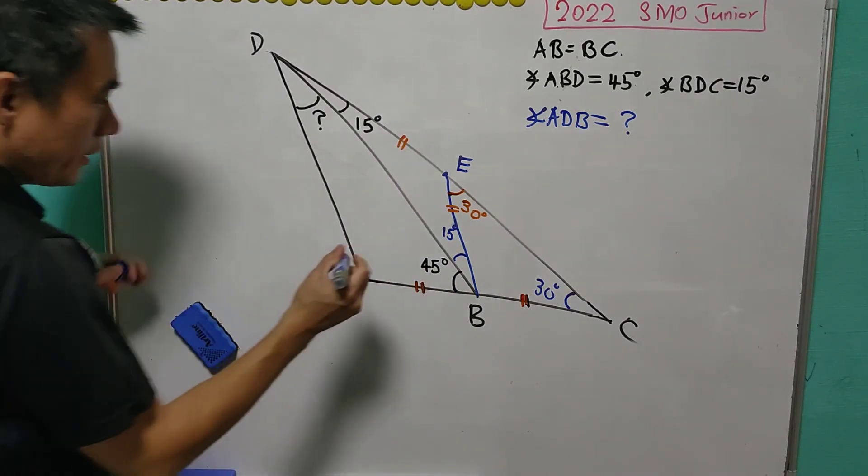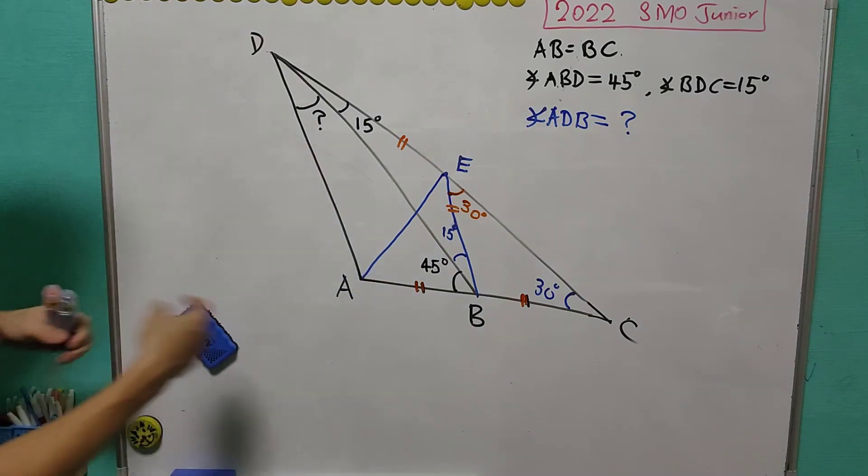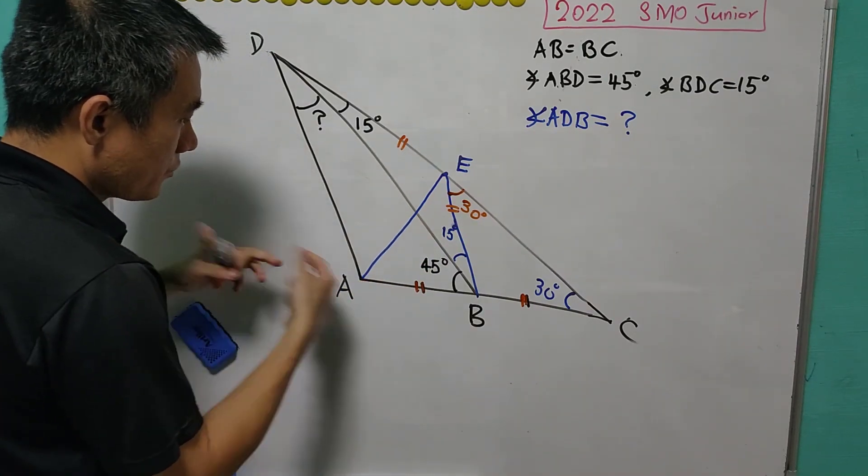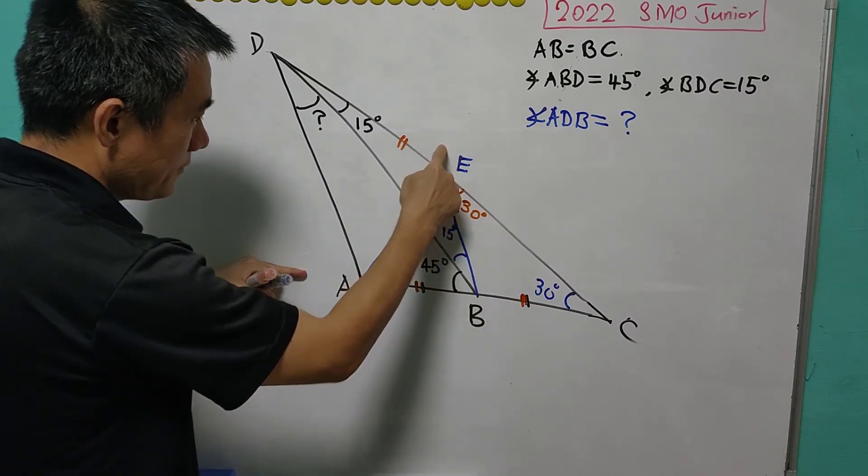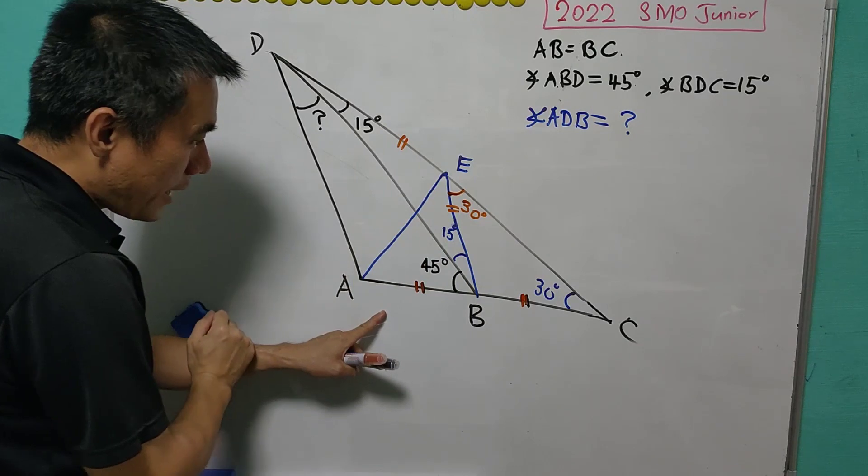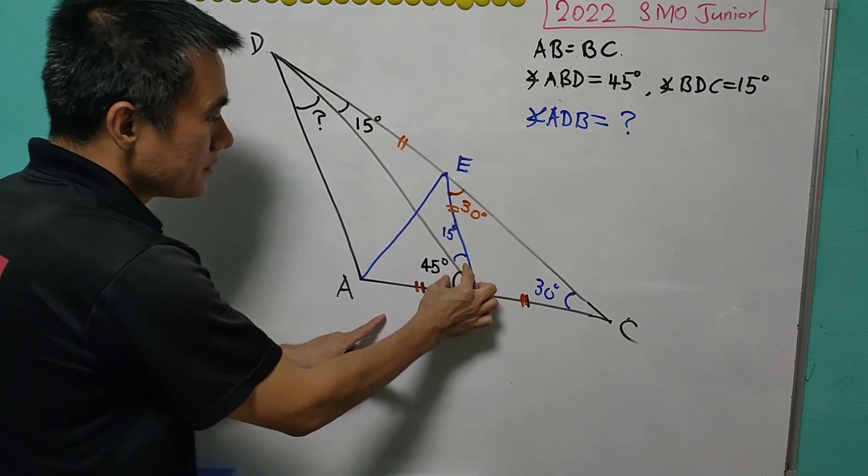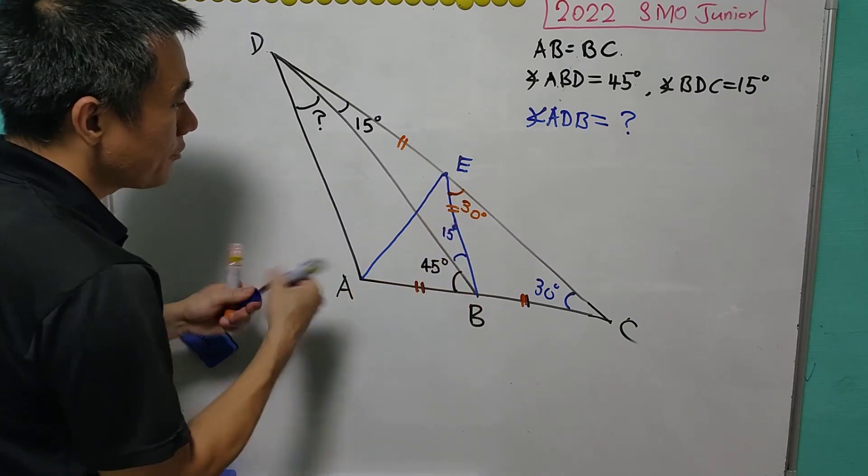After that, we join A and E. Now, we will focus on the triangle ABE. It is an isosceles triangle, but not only that, because the angle is 60 degrees. A 60 degree isosceles triangle, therefore, it must be an equilateral triangle.